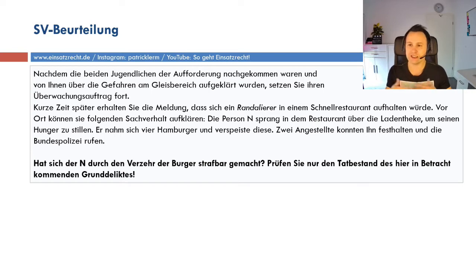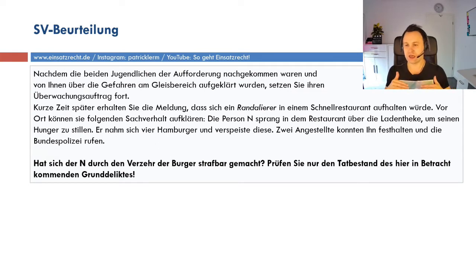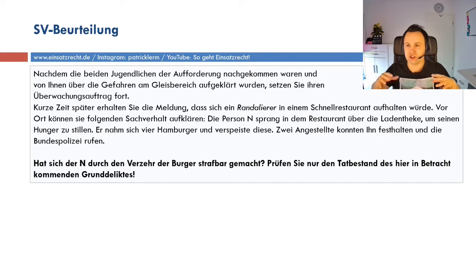Selbst nach der Schuld könnte man besondere Strafbarkeits- oder Strafverfolgungsvoraussetzungen erwähnen: Ist das ein Antragsdelikt? Liegt der Strafantrag vor? Oder ist es ein Offizialdelikt? Das, was ich hier mache, ist im Grunde das, worauf es in den Prüfungen ankommt: Tatbestand, Rechtswidrigkeit und Schuld. Das sind die drei großen Punkte. Es gibt durchaus noch mehr, und das Schema lässt sich weiter aufbauen.